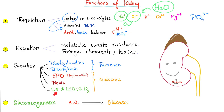The kidney can also secrete the active form of vitamin D, also known as vitamin D3, or 1,25-dihydroxycholecalciferol — with hydroxyl groups at carbon number 1 and carbon number 25.